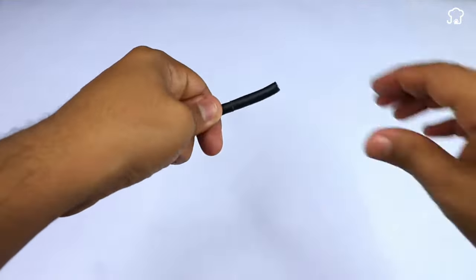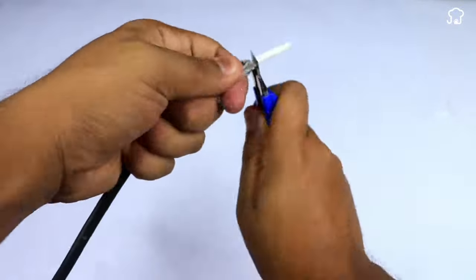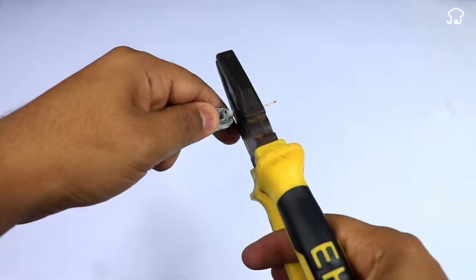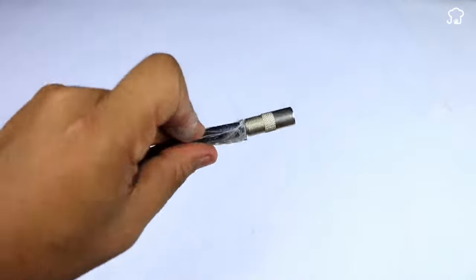For the other end of the cable, we will repeat the process. Only this time we will put a coaxial adapter on one of the ends so that it connects to the can, which in this case will act as an antenna.